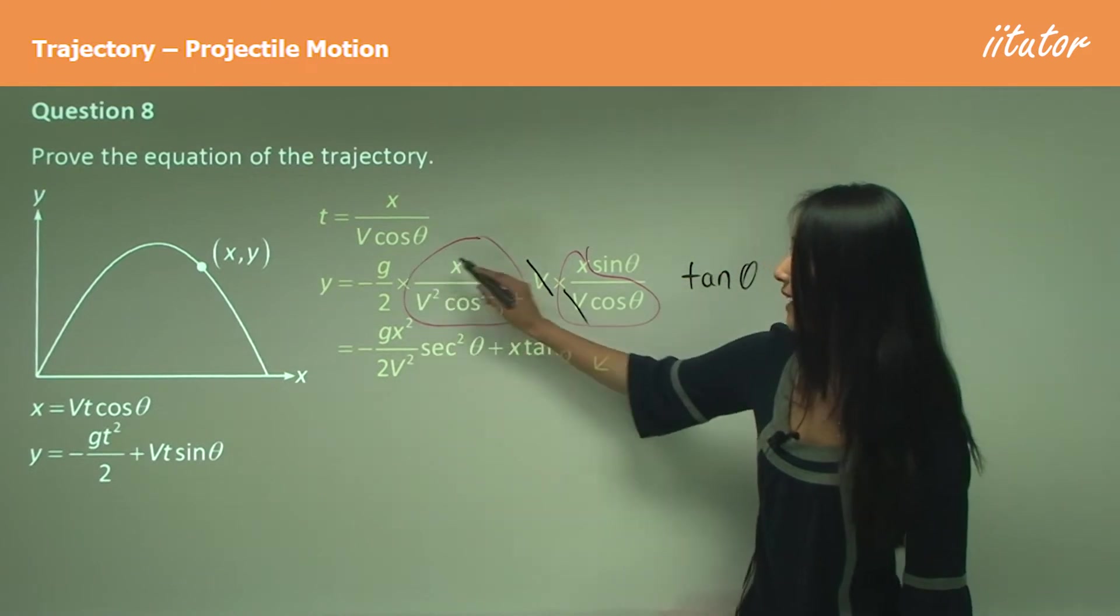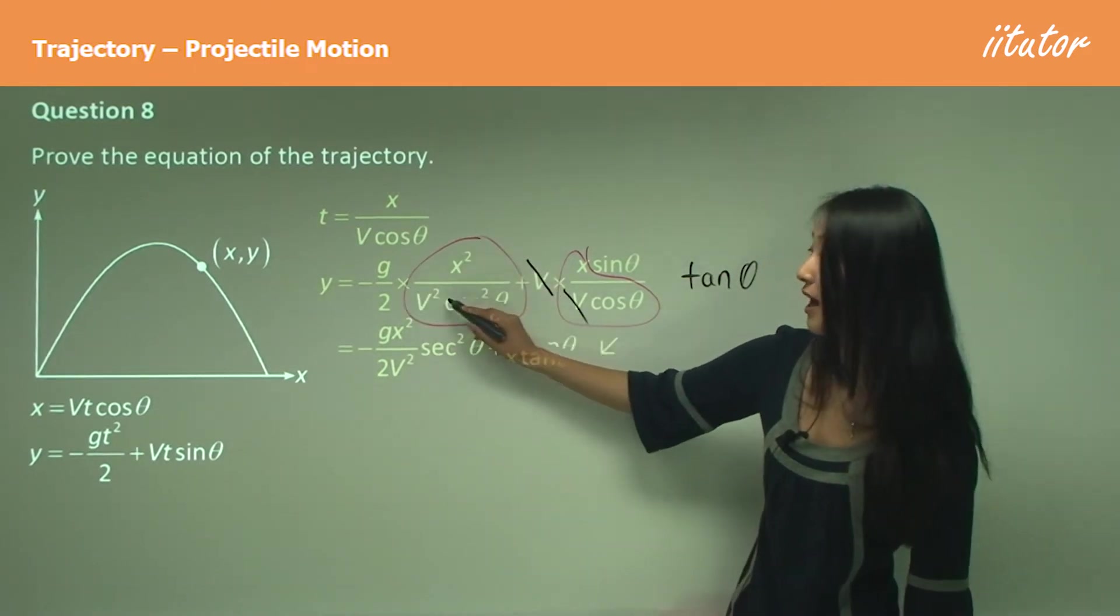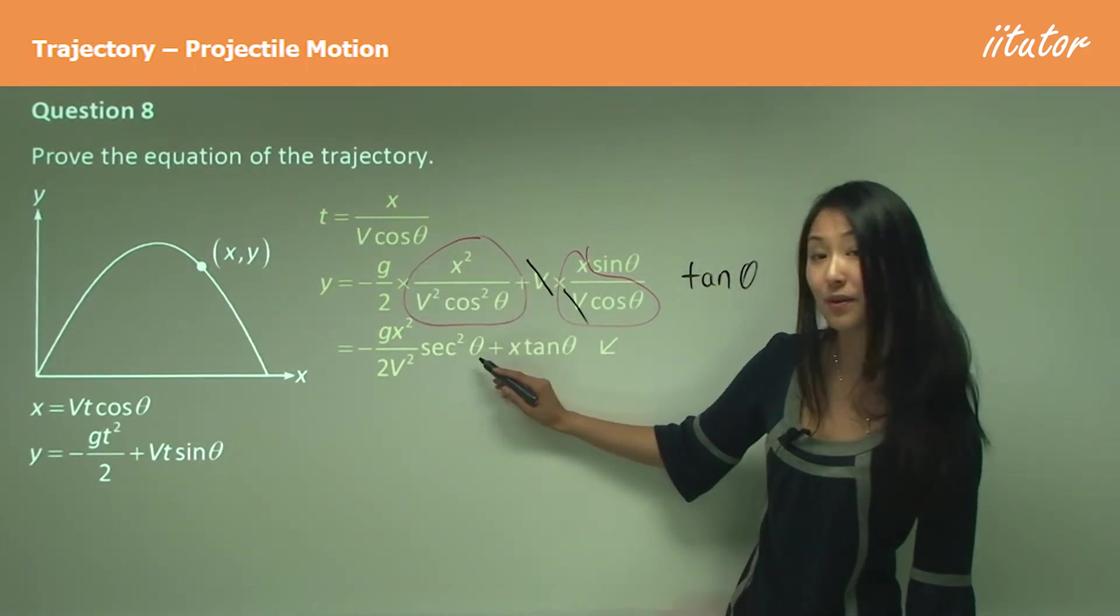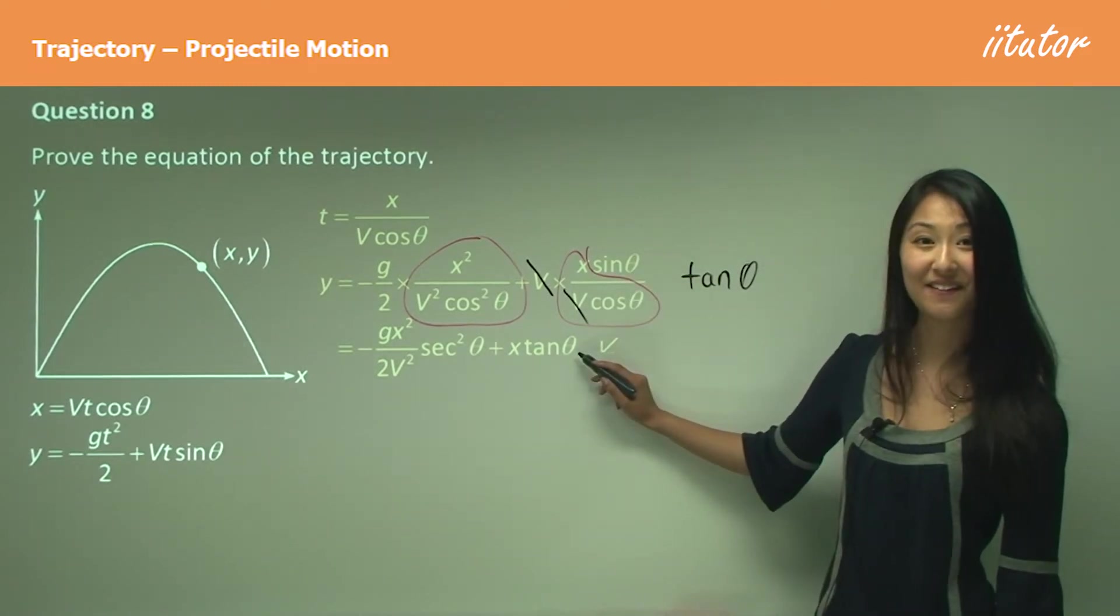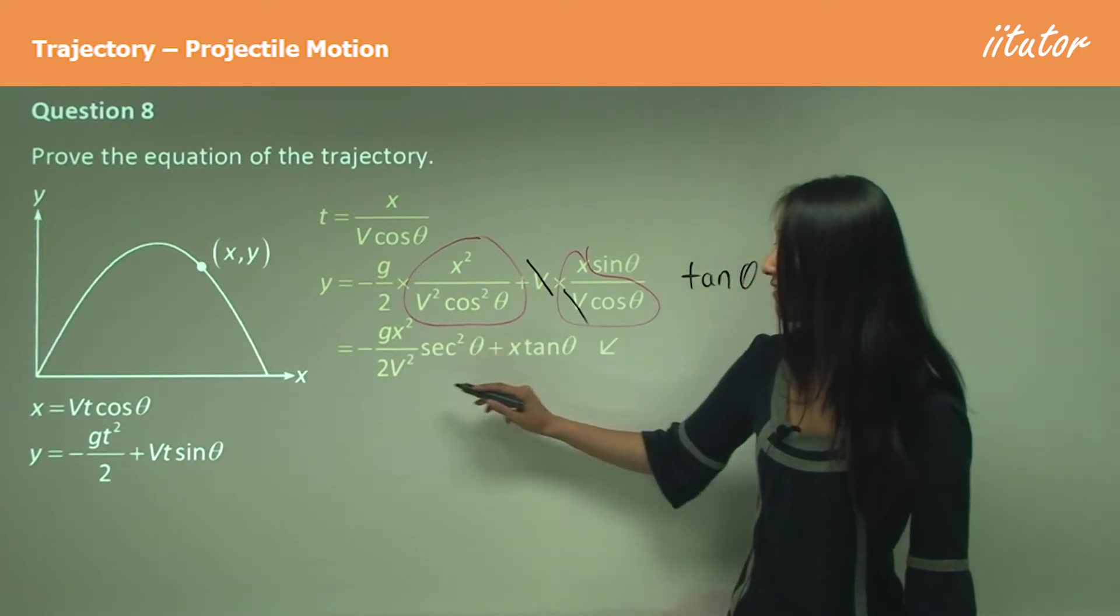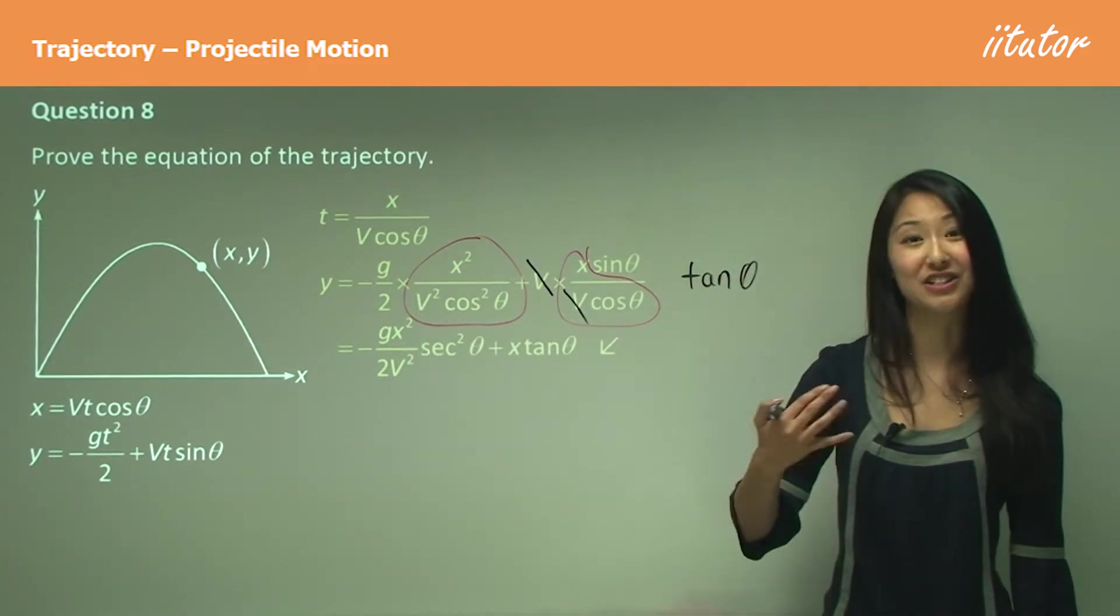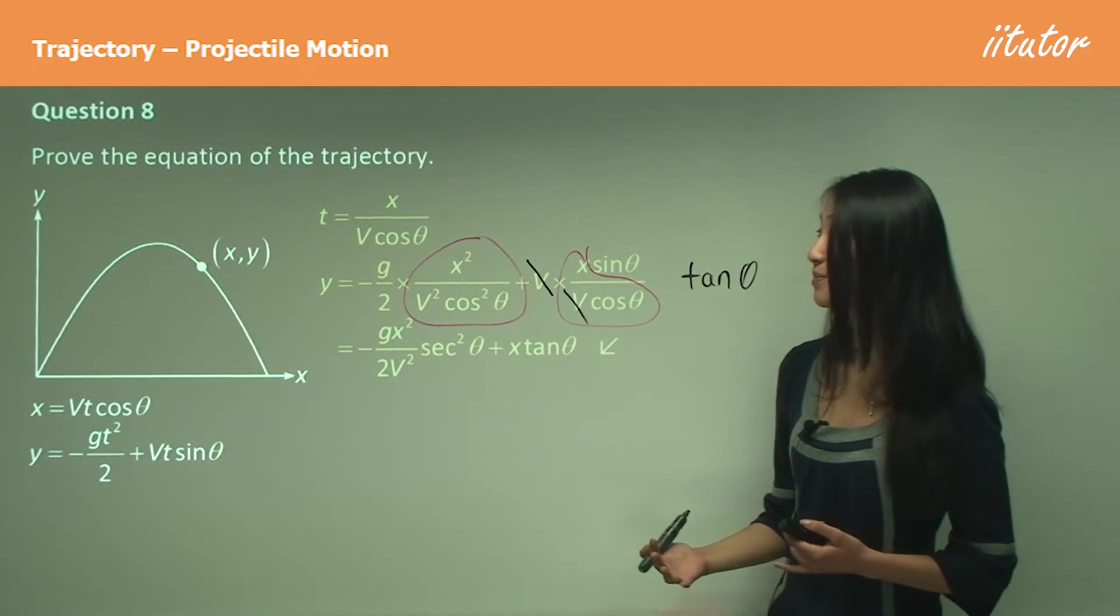And this just leaves x times tan θ there. That's how we get that equation for the equation of trajectory. Just to prove it, all you need to do is make this equal t, and then eliminate t and simplify, and you have it there.